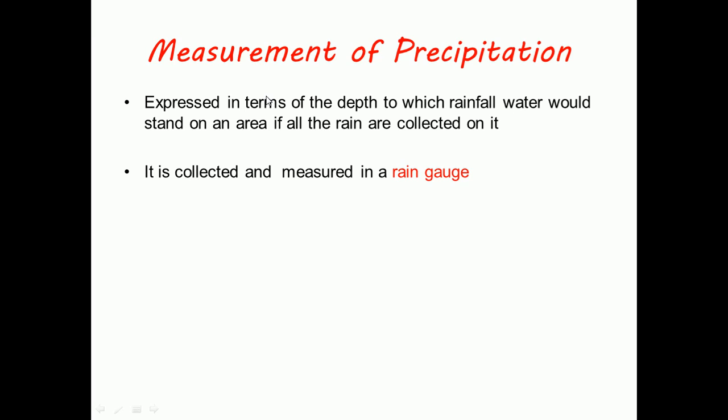We can say like 1mm rainfall in 1 hour or 10mm or 100mm rainfall in 3 hours. We generally use these terms and talk in terms of depth to measure precipitation.